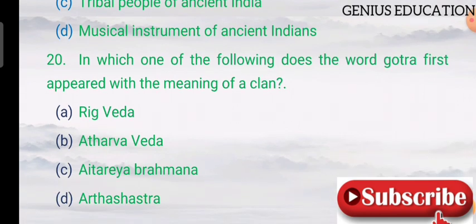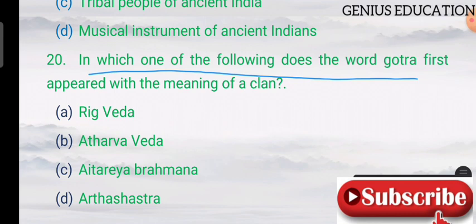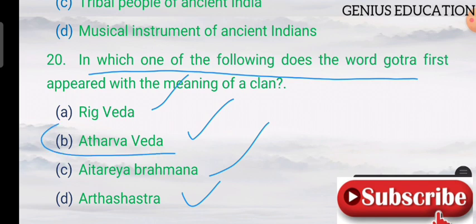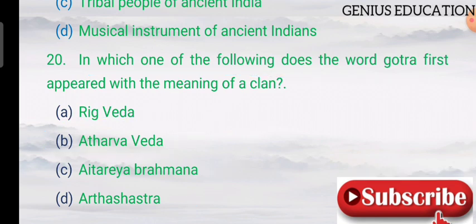Question 20: in which one of the following does the word 'Gotra' first appear? Options are Rig Veda, Atharva Veda, Aitareya Brahmana, and Arthashastra. The answer is the Atharva Veda. Thank you for watching this video — subscribe to the channel if you are preparing for different competitive examinations.